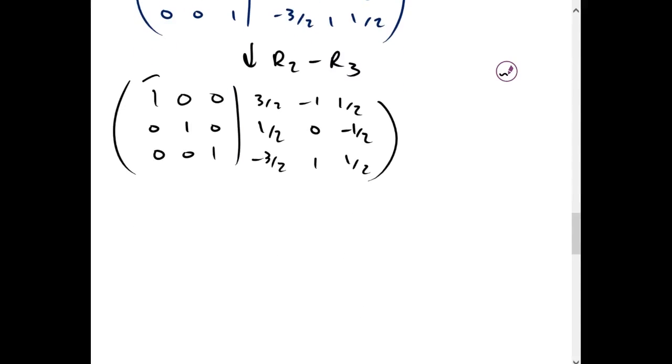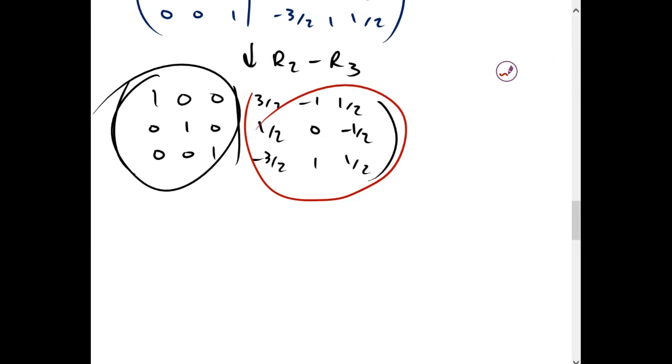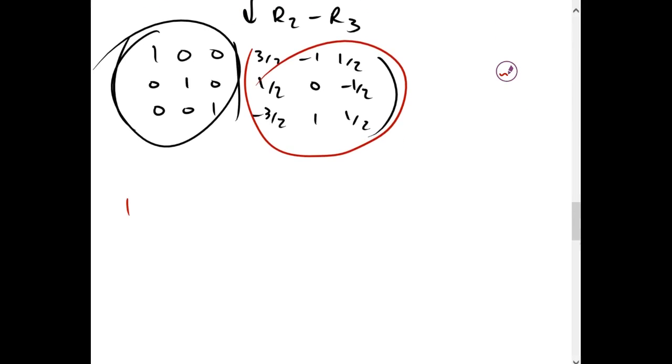And now that we have the identity matrix on this side, the inverse is on this side. So, the inverse to our original matrix equals 3 halves, negative 1, 1 half; 1 half, 0, negative 1 half; and negative 3 halves, 1, 1 half.